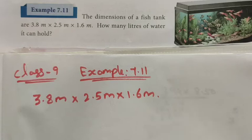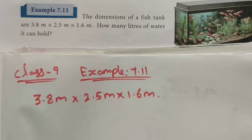Hi students, Class 9, Example 7.11. The dimensions of a fish tank are 3.8 meter by 2.5 meter by 1.6 meter. How many liters of water can it hold? Here we want to find the water capacity, so we want to find the volume of the cuboid.